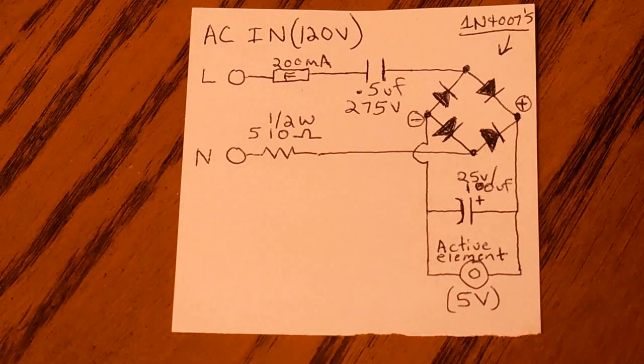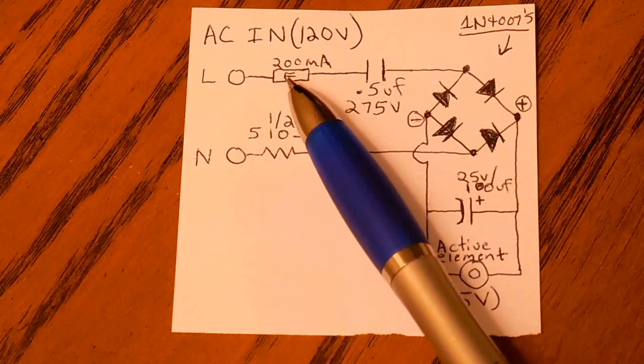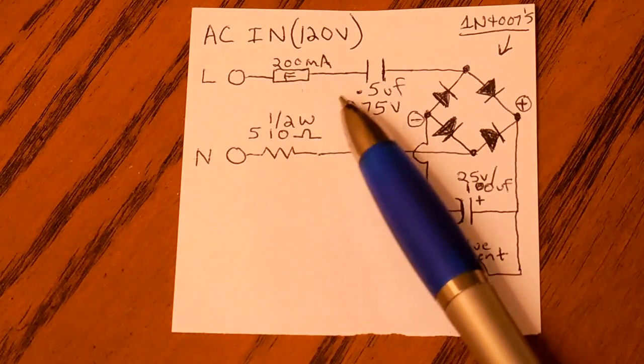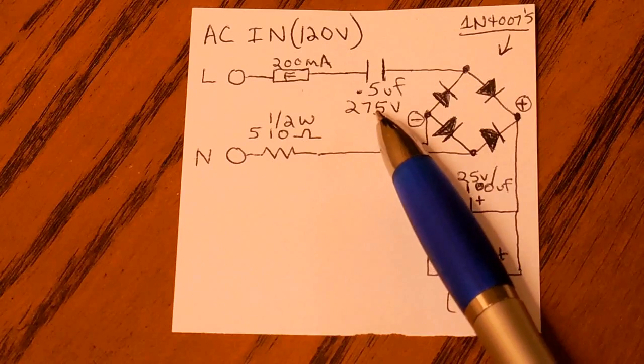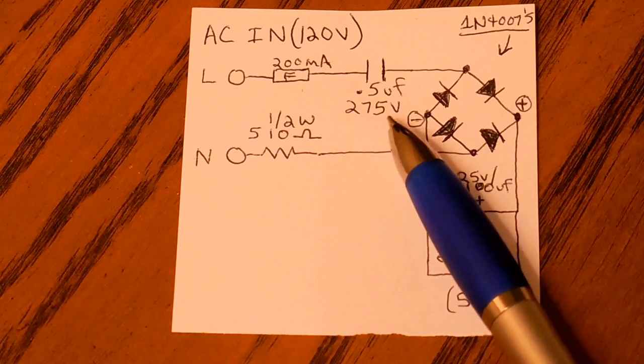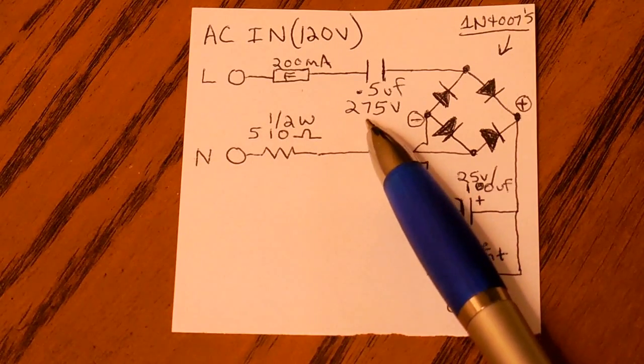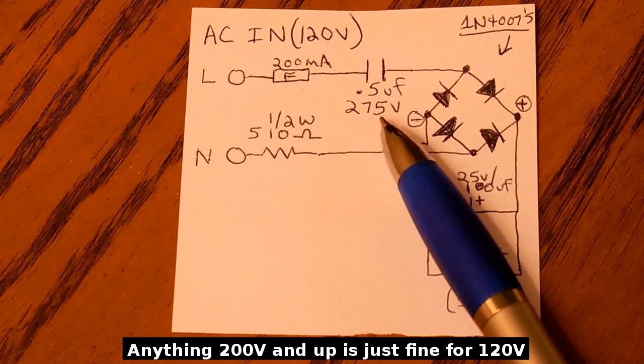The schematic you see here is for 120 volts. That's your line. You need a 200 milliamp fuse. That's going to flow through a 0.5 microfarad, or close to it. 275 volt, non-polar capacitor. Make sure it's rated at least 275 volts.